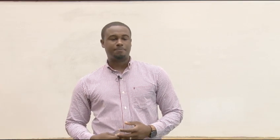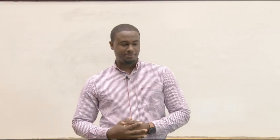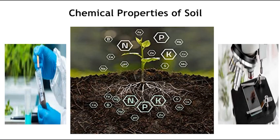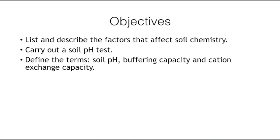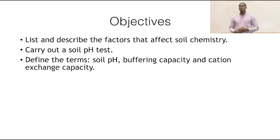Chemical properties of soils. Alright, so let's get right into it. Our objectives are: one, list and describe the factors that affect soil chemistry; two, carry out a soil test; three, define the term soil pH, buffering capacity, and cation exchange capacity.